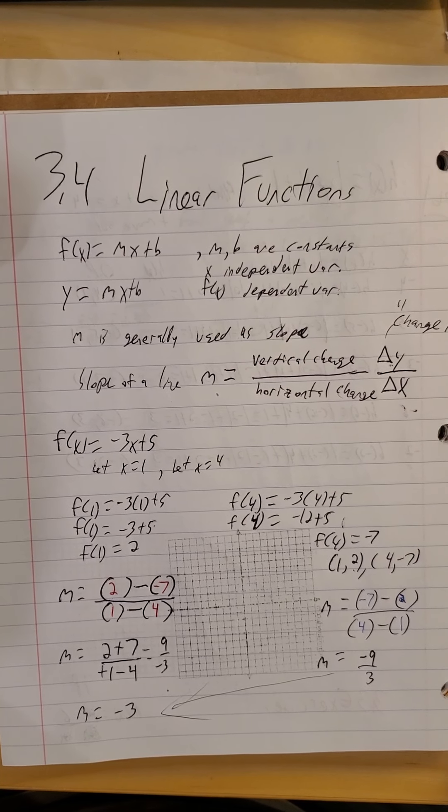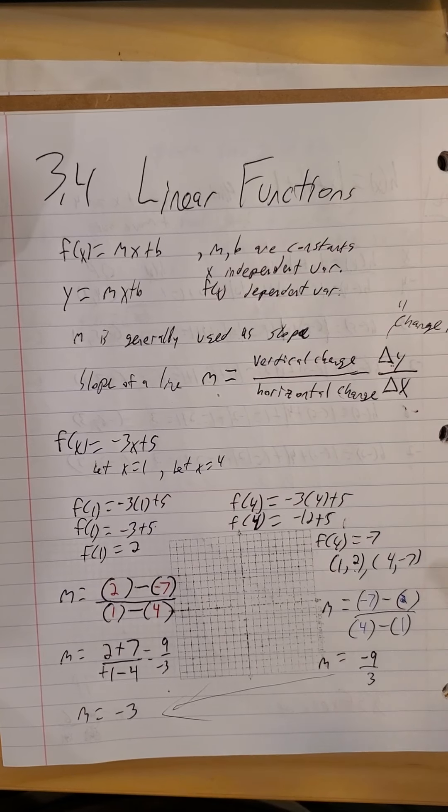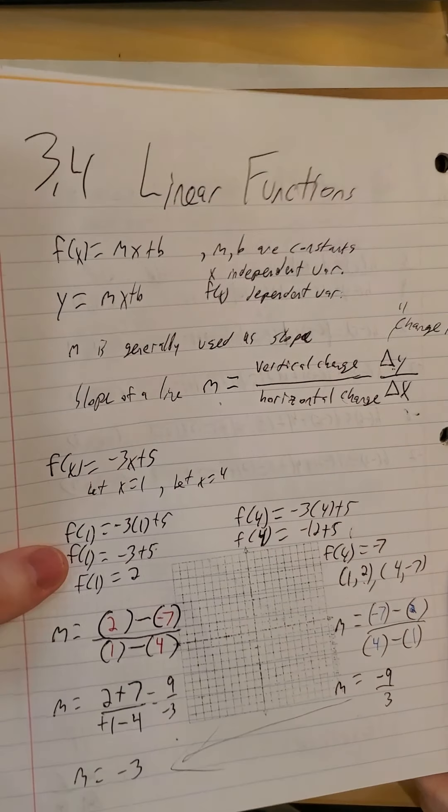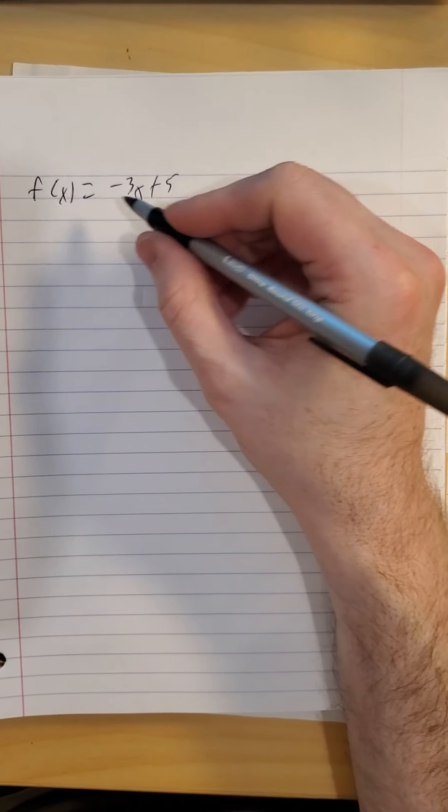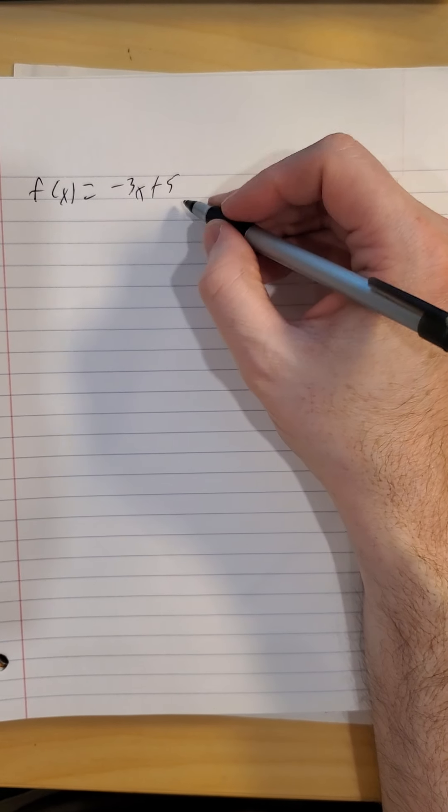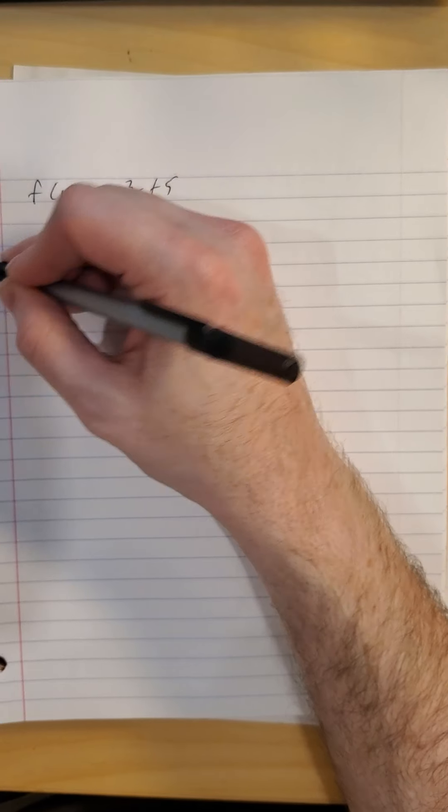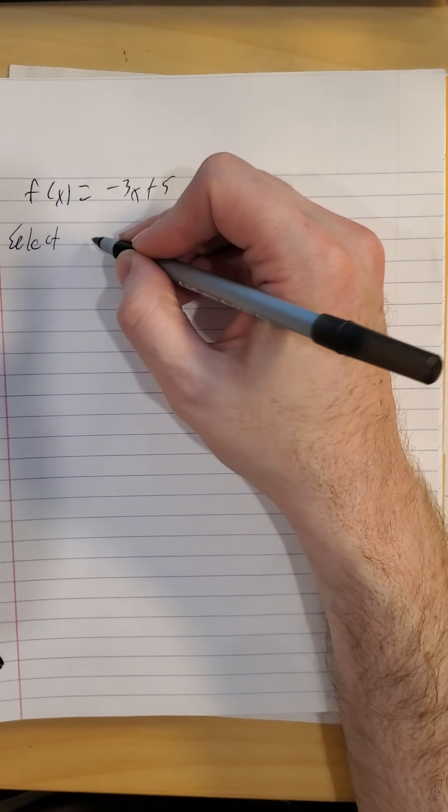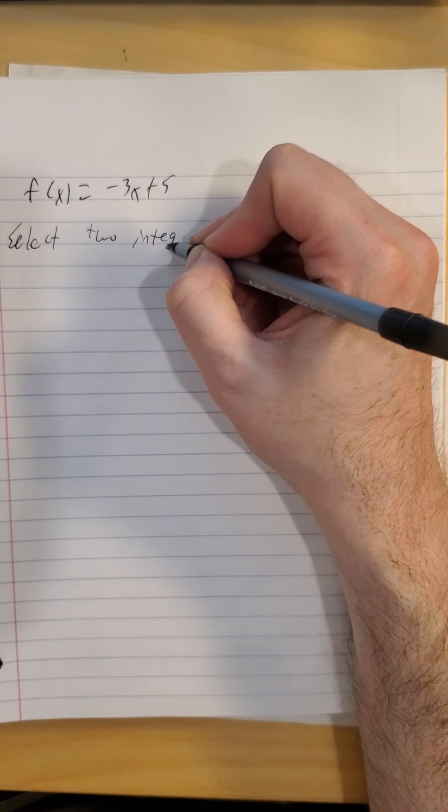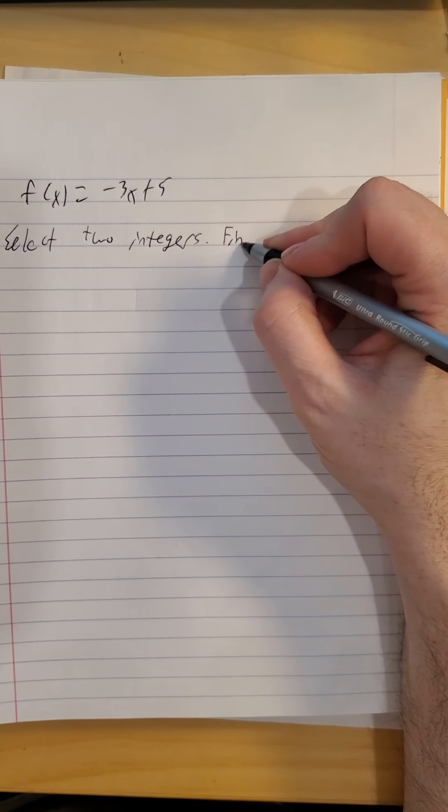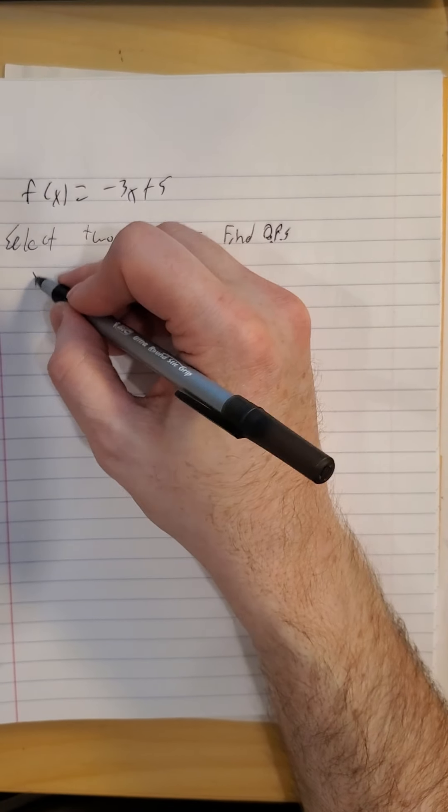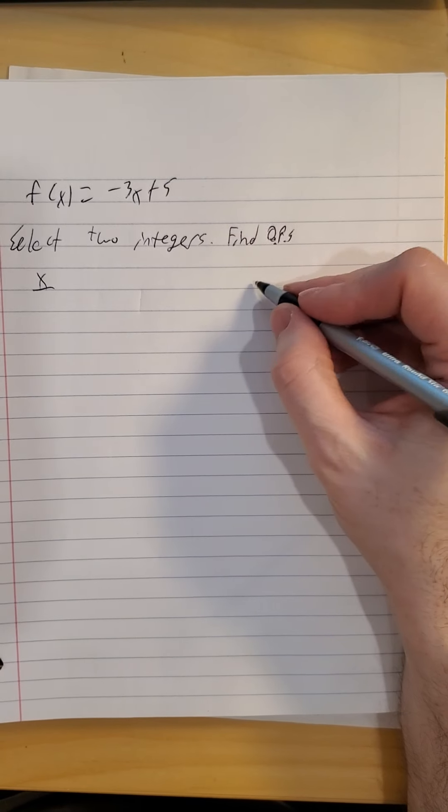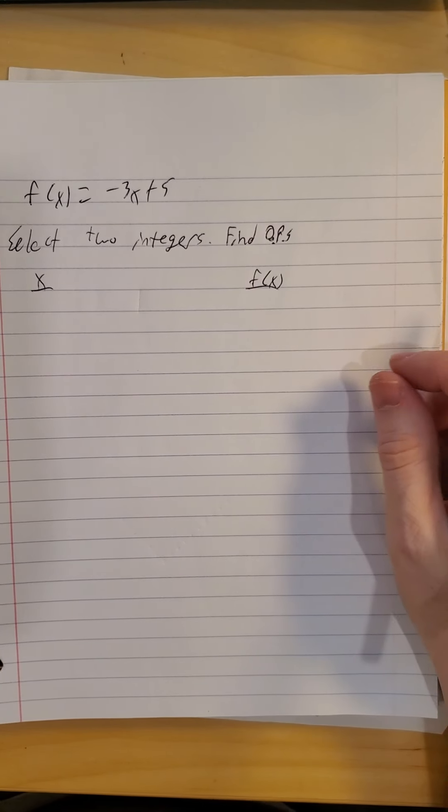Now there's nothing special about that pair of ordered pairs. I could have picked a totally different pair of numbers for the same function. Let me go ahead and flip here. I could have just as easily, let me copy the function over, we had negative 3x plus 5. We could very easily have just let you pick your own integer. Select two integers. Find ordered pairs. So pick out two numbers for x, find out the f of x values, and then we'll take a look at the slope.